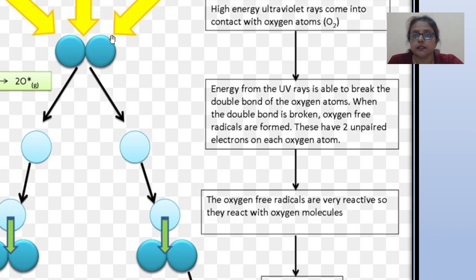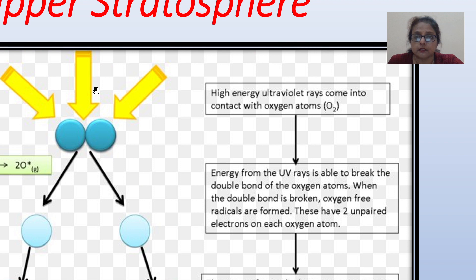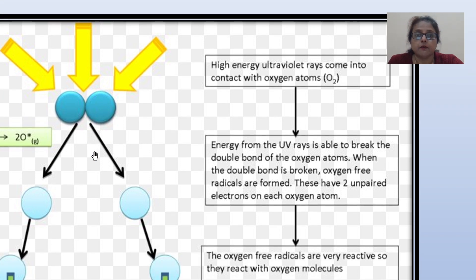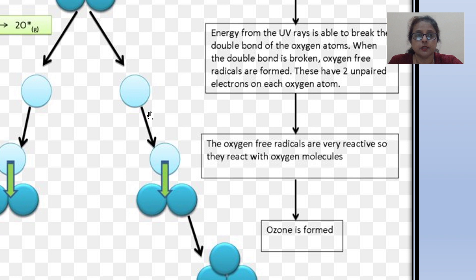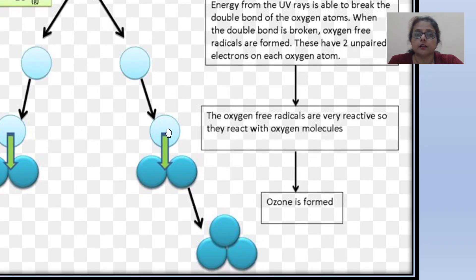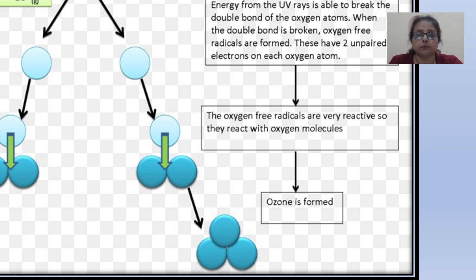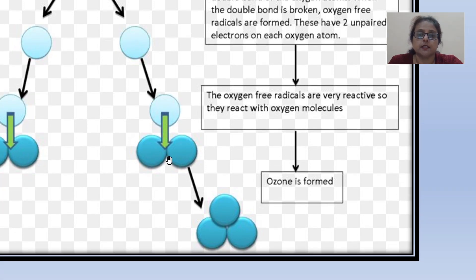Here we can see the ultraviolet ray is splitting these two molecules of oxygen. The double bond of oxygen is broken and the free radical of oxygen is formed, with two unpaired electrons in each oxygen atom. These oxygen free radicals are very reactive and they react with other oxygen molecules to form ozone — two atoms of oxygen add up with another free radical of oxygen and form O3, or ozone.